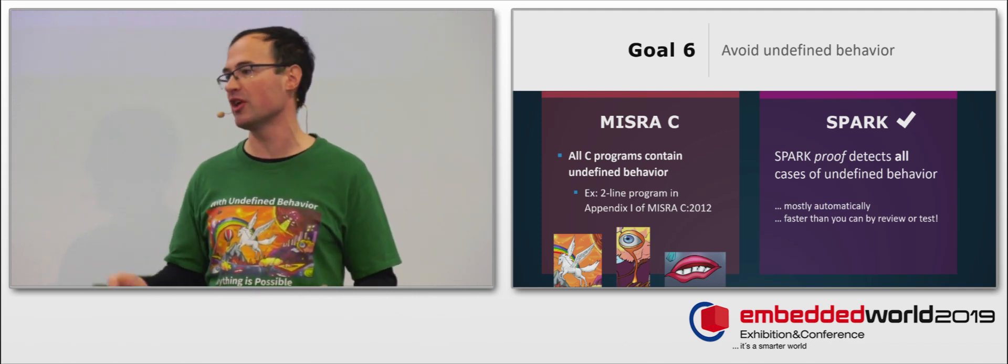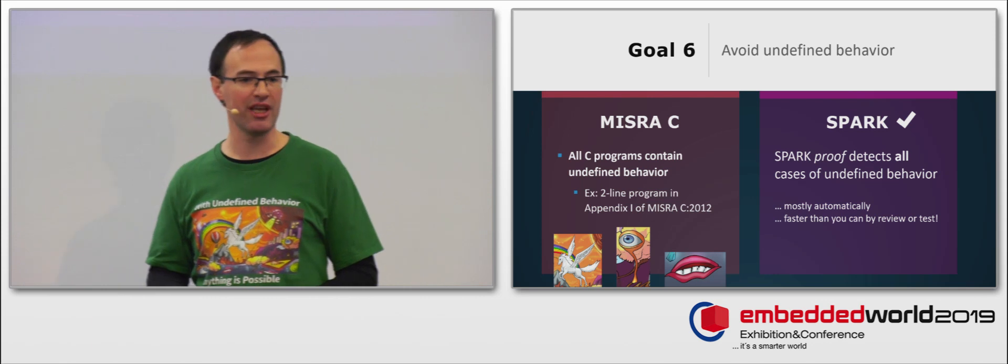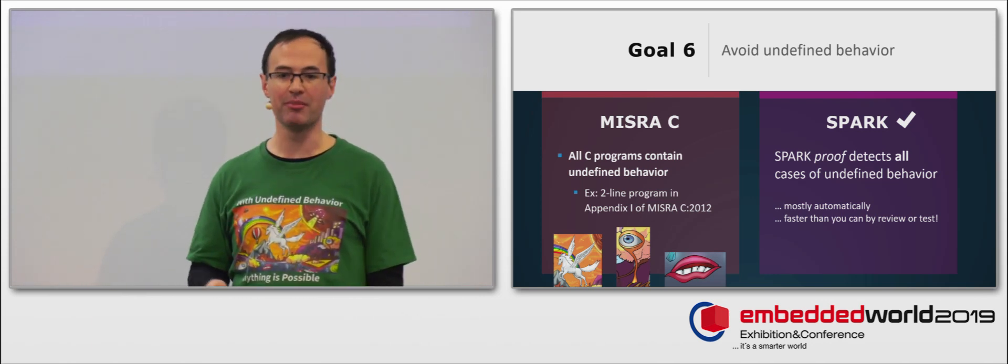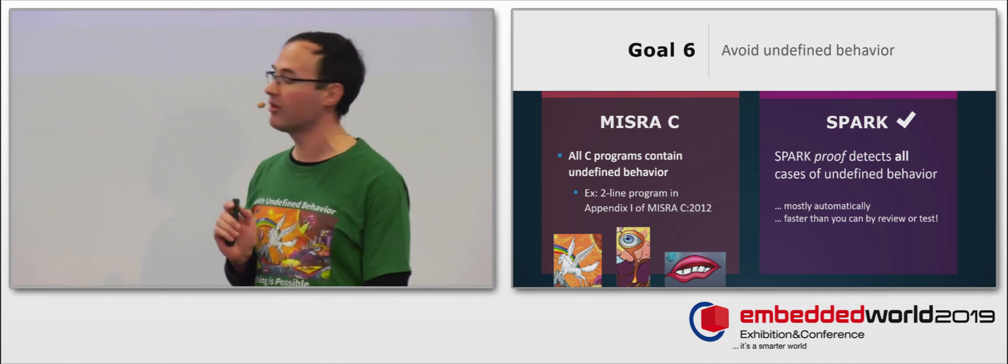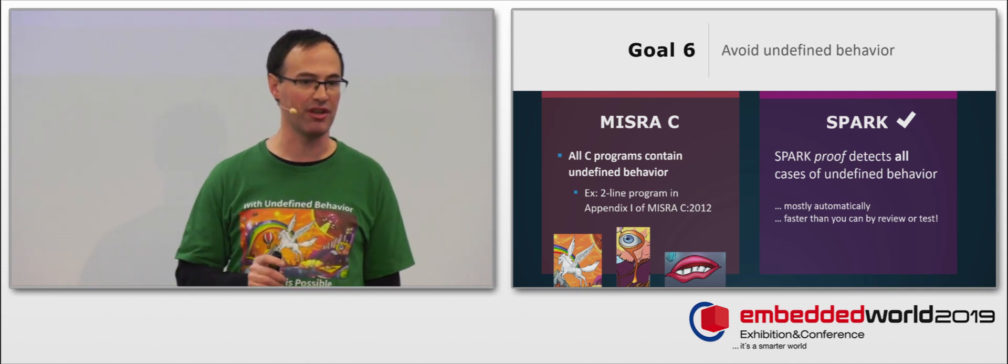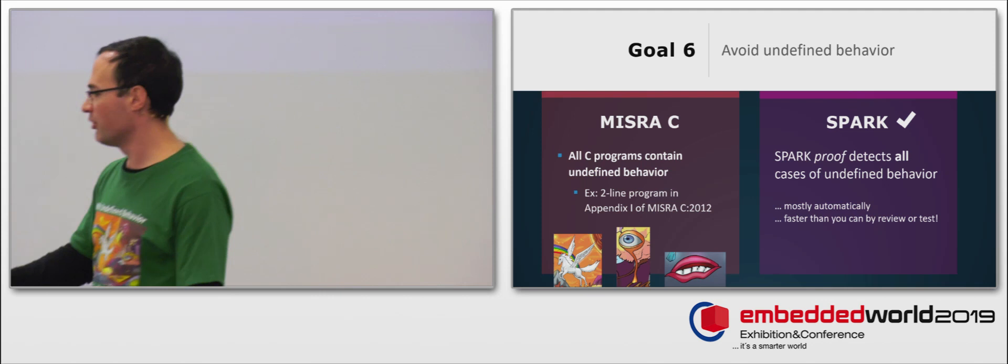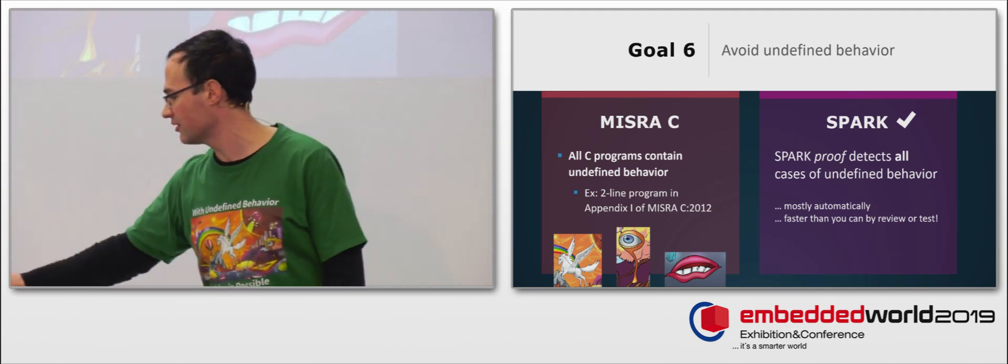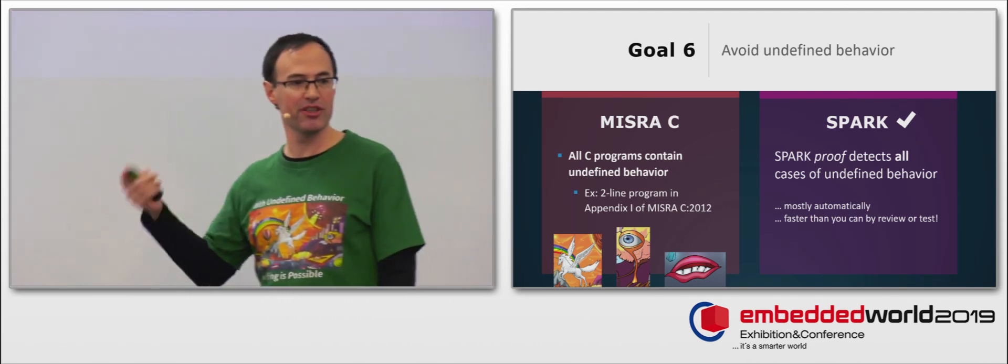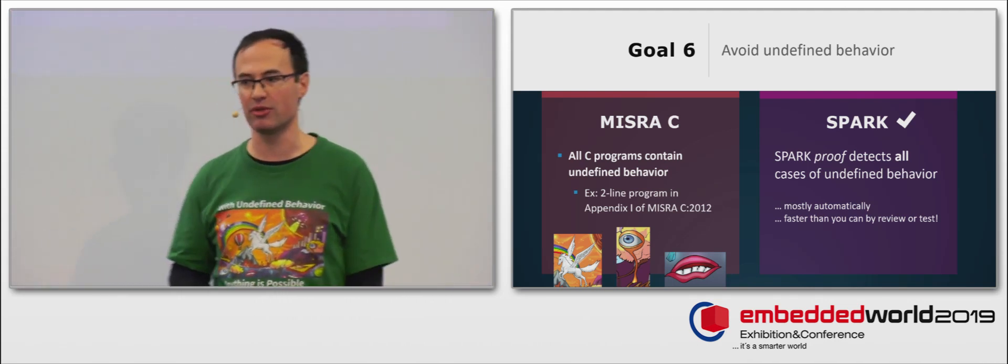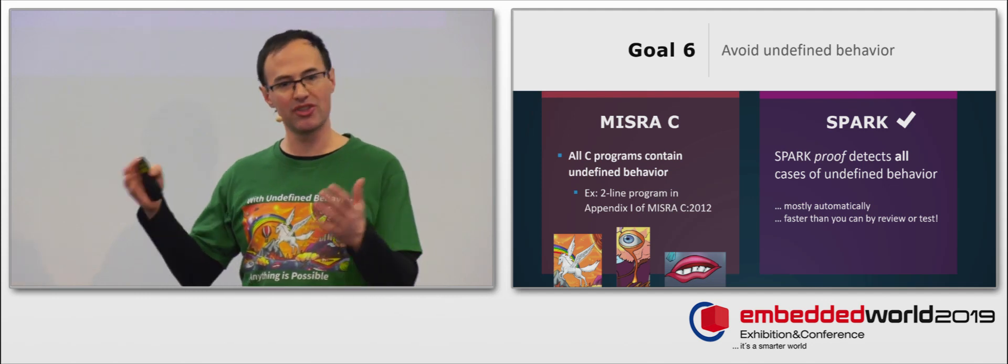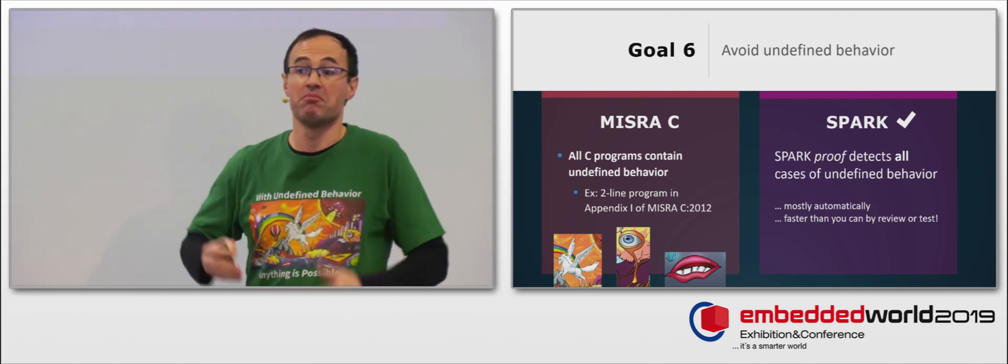So, it would be okay if it was an oddity, a curiosity if undefined behavior didn't occur in the wild. That's not the reality. The reality is that all C programs have undefined behavior. And my favorite example is a two-line program in the MISRA C document itself. So, we have written this book comparing MISRA C and Spark that you can take. And in the preface, you will see this example, the details of this one. So, if the experts in the MISRA C committee didn't see that undefined behavior, who can?